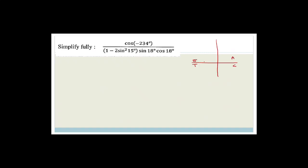Minus 234 degrees goes clockwise. An easy way to fix this is to add 360 degrees to get a positive version. On a cosine graph, minus 234 is in phase with a point that is 360 degrees later — because 360 degrees is one full period. So adding 360 gives a point with the same cosine value.